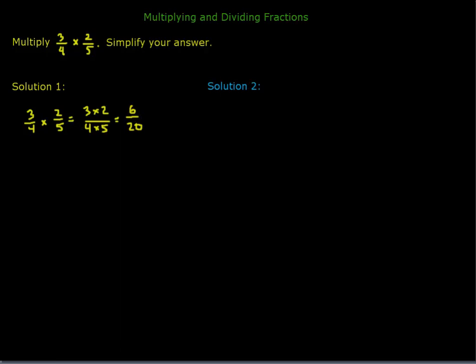So in order to simplify 6 20ths, we have to notice there is a common factor of 2, both in the 6 and in 20. And so we're going to divide by that common factor. Divide by 2 in the numerator, divide by 2 in the denominator. So when we do that, 6 divided by 2 becomes 3, and 20 divided by 2 is 10. And there is our answer simplified.